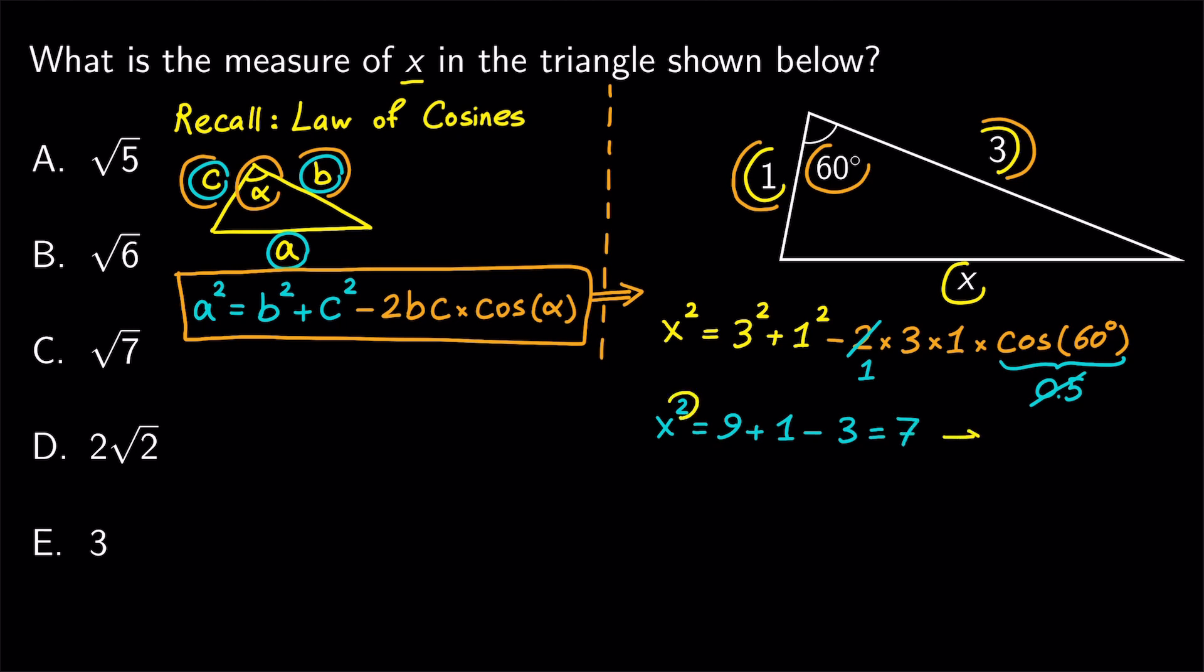We take the square root and get x equals square root of seven. And that's it. The answer is C. Great. That's a typical problem that you may encounter on the ACT math section that involves applying the law of cosines.